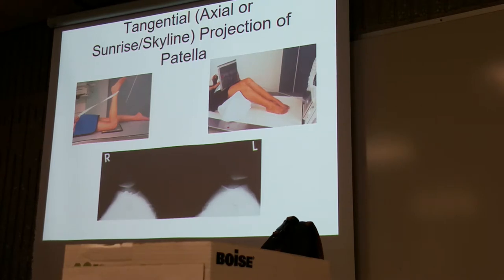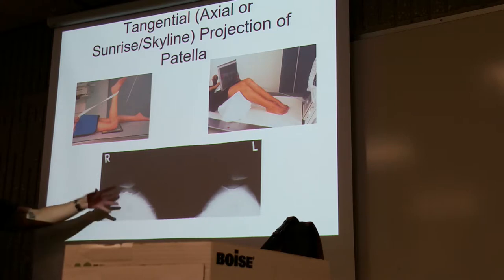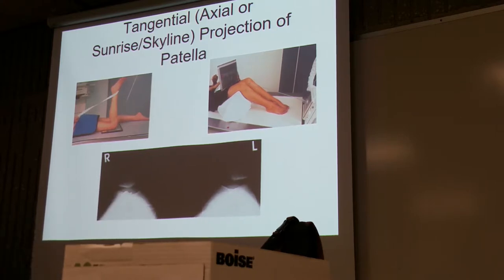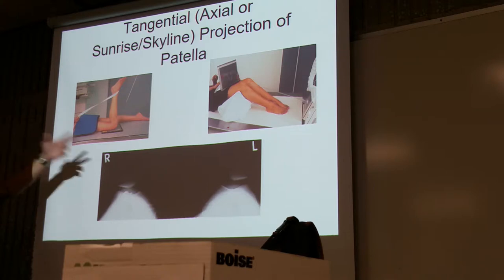These are called the sunrise or skyline views to isolate the patella away from the rest of the bones. When we're looking at the patella, we can't do a straight shot of it because the patella sits on top of the femur. So when you're doing a straight AP of the patella, you're not going to see it very well because of the distal femur. So we do these skimming-type projections to isolate the patella from the rest of the bones.